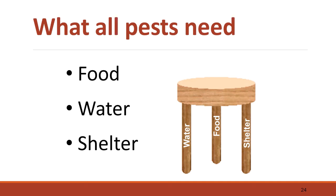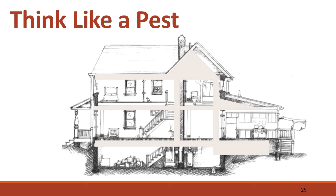Pests require three things to survive: food, water, and shelter. The three-legged stool illustrates this point — if we eliminate any of the three legs, pest infestations won't stand up. The more of these we can remove, the more likely pests will find somewhere else to live. In order to combat pests, we need to understand how they think and behave — it's a know-your-enemy strategy. We can then use what we've learned about their habits against them.